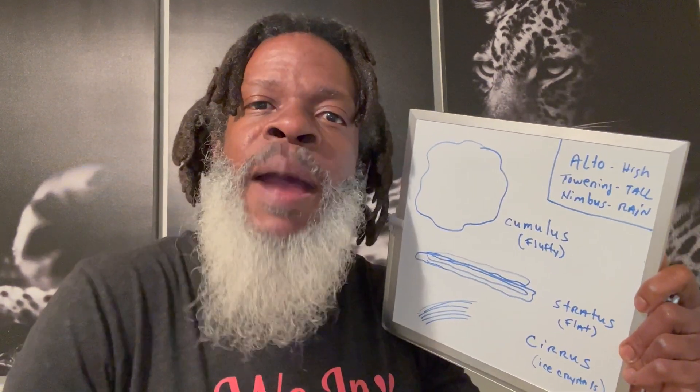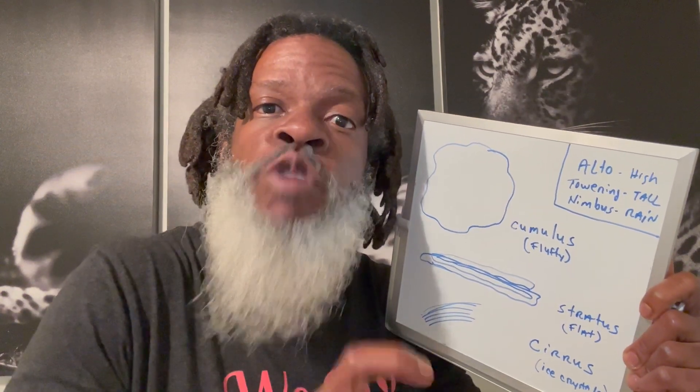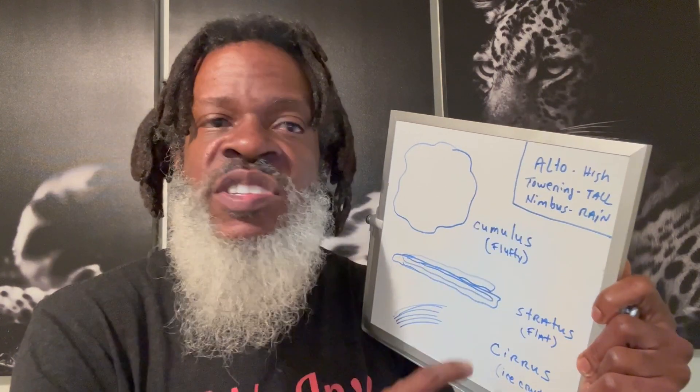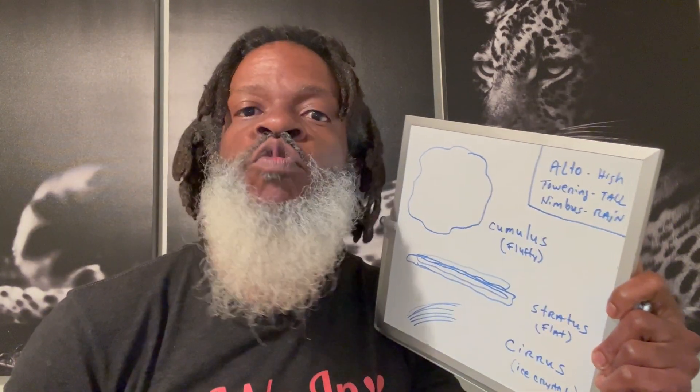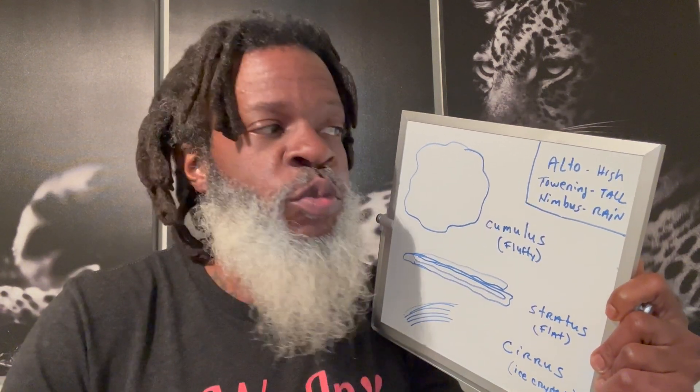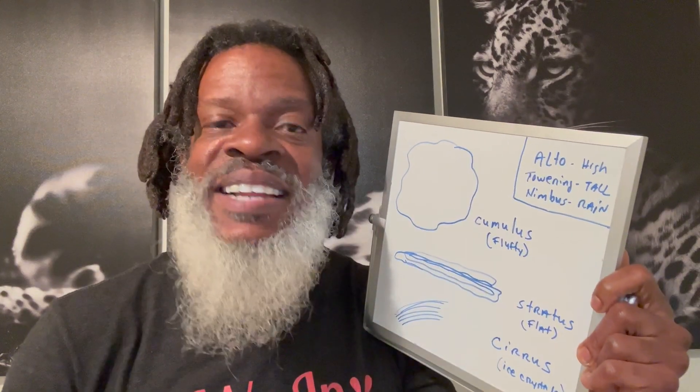Now that you know the three primary types of clouds, there are also some descriptors that can be used as a prefix or suffix attached to that cloud name to give it a little bit more detail — to paint the picture a little bit deeper. Those three prefixes or suffixes are usually going to be alto, towering, and nimbus. Alto simply means high, towering means tall, and nimbus means rain. You want to familiarize yourself with those three descriptors that can be attached to any of these clouds.